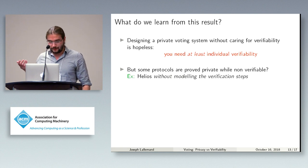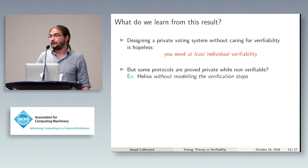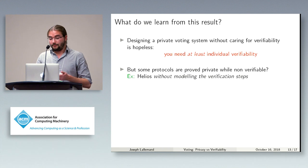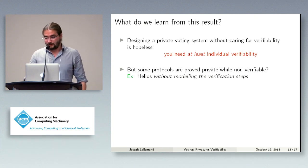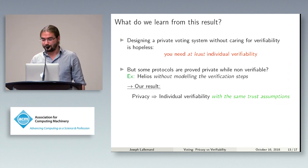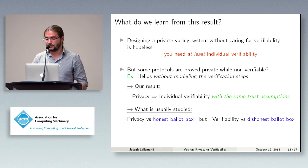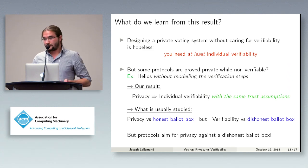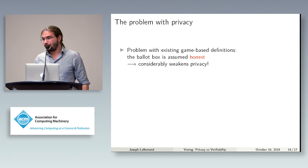Some protocols have been proved private without being verifiable. For instance, the Helios protocol — a well-known voting protocol — has been proved private without even modeling the verification steps. The protocol provides some verification mechanisms for voters, but it has been proved private without modeling them, which should not be possible. This comes from the fact that our results say privacy implies verifiability with the same trust assumptions with respect to the election authorities. What is usually studied is privacy against an honest ballot box, but verifiability against a dishonest ballot box.